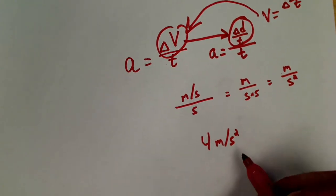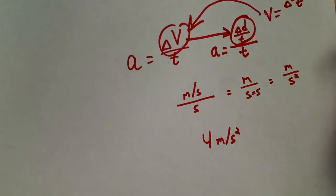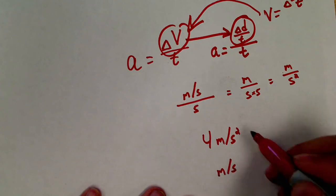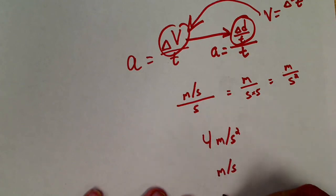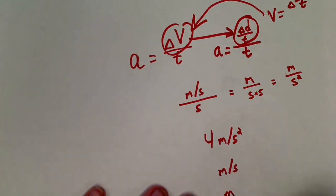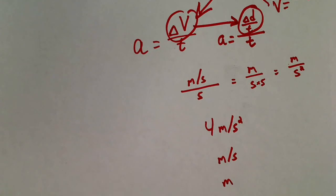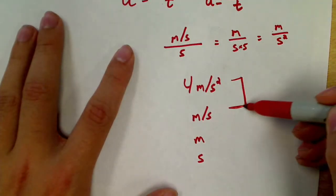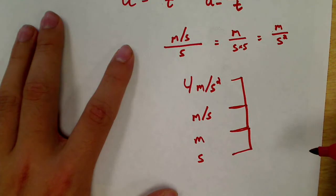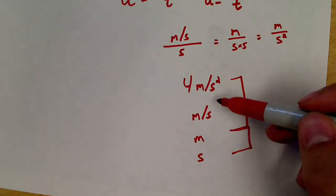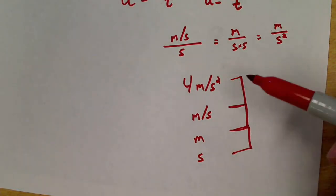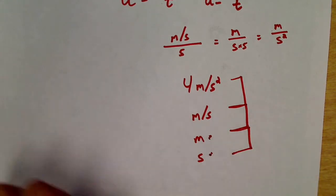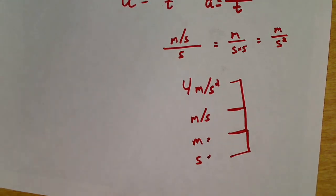Meters per second squared is acceleration. Meters per second is velocity. Meters is distance. Seconds is time. These are connected but they are different — they're related to each other. If you memorize these two, you can use a formula chart to find out the rest.